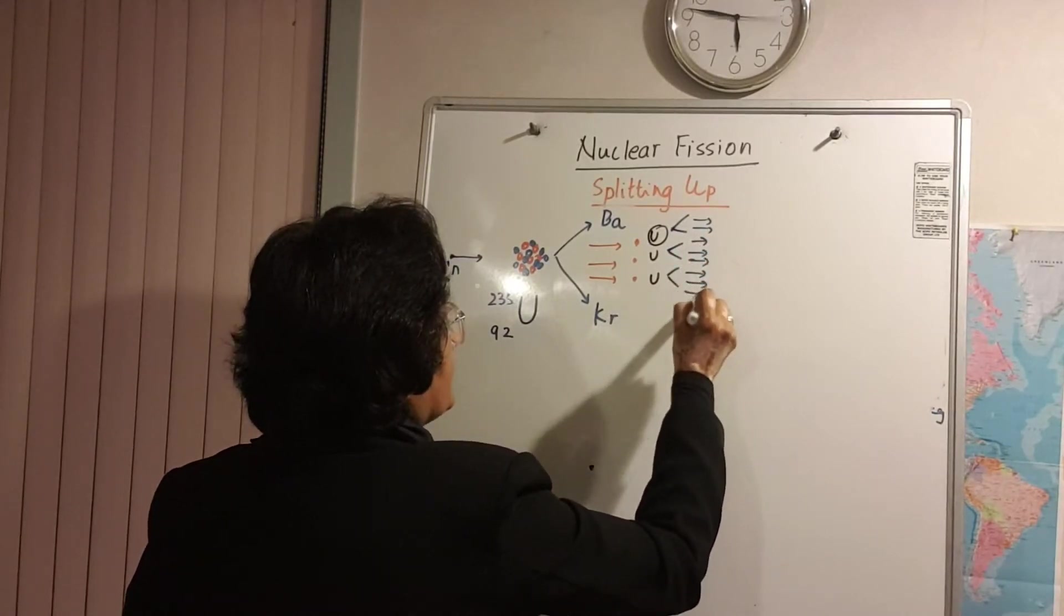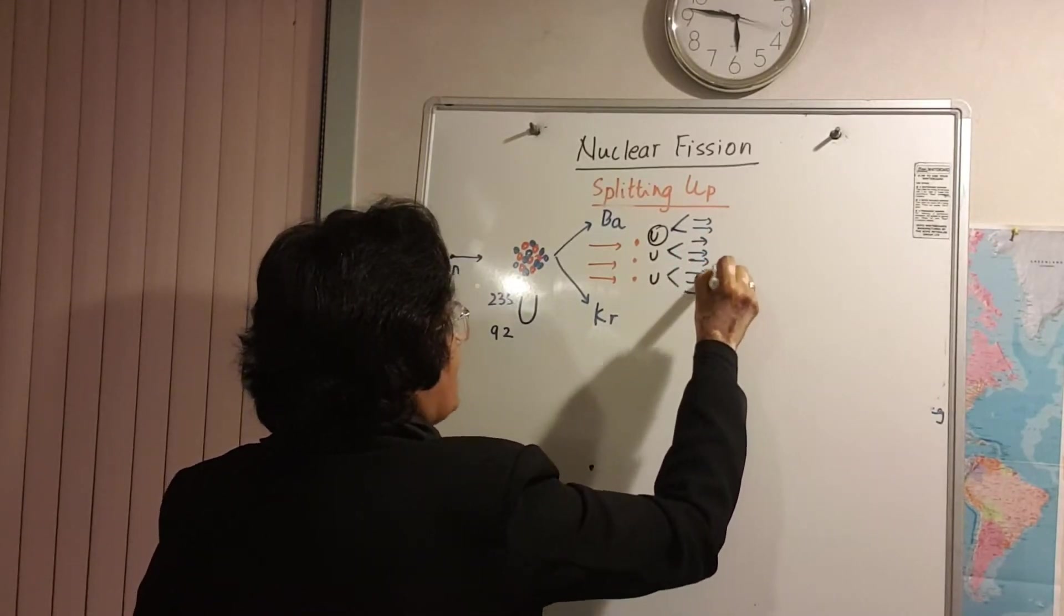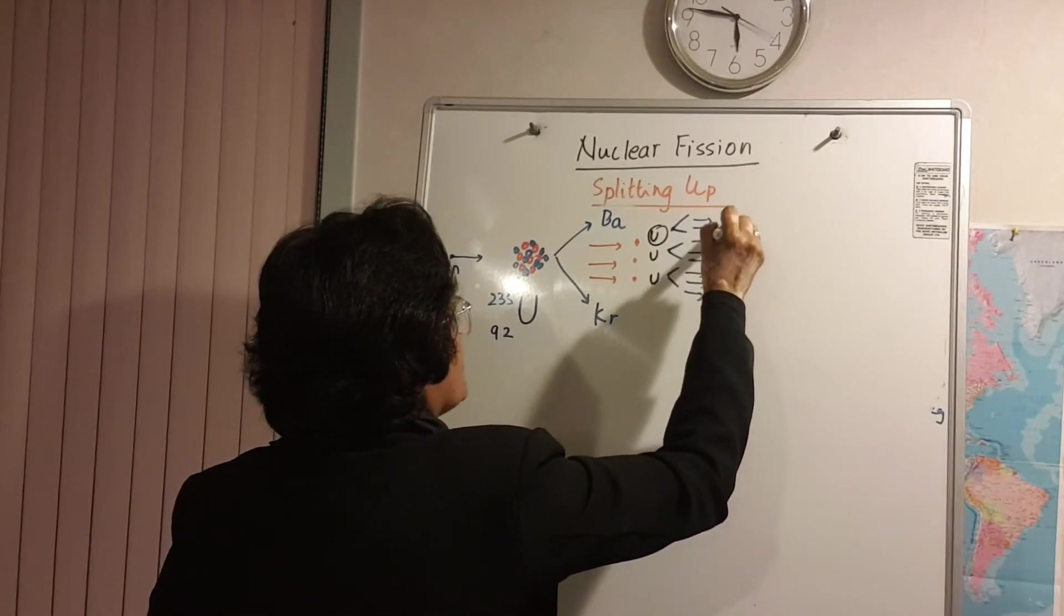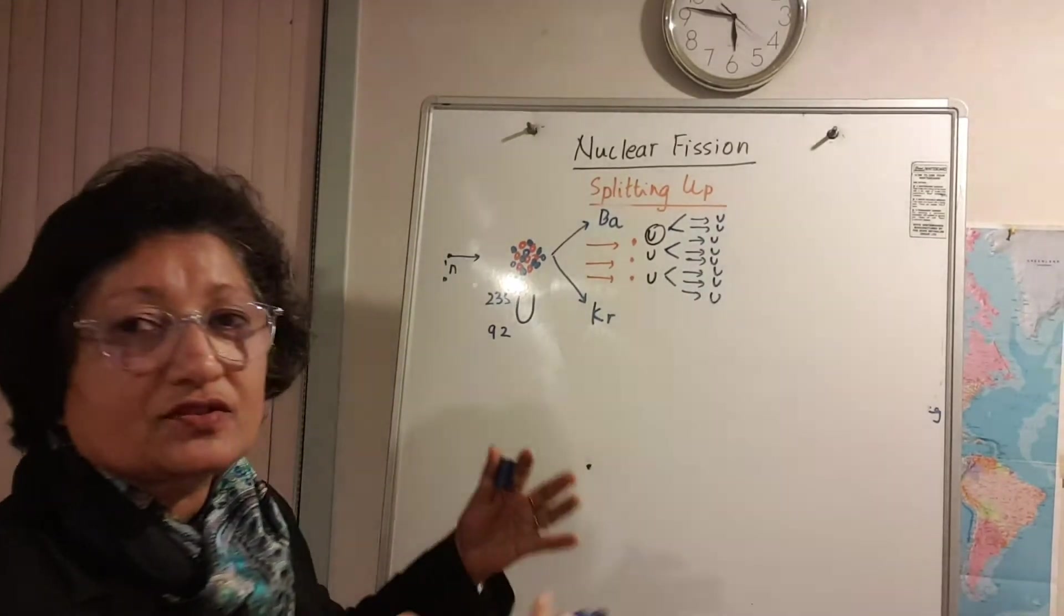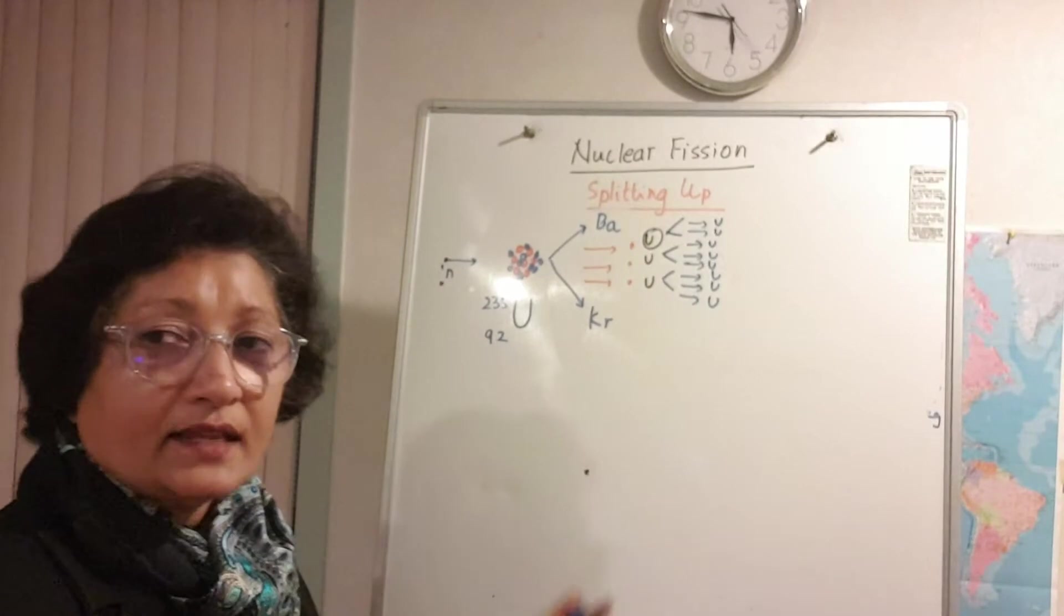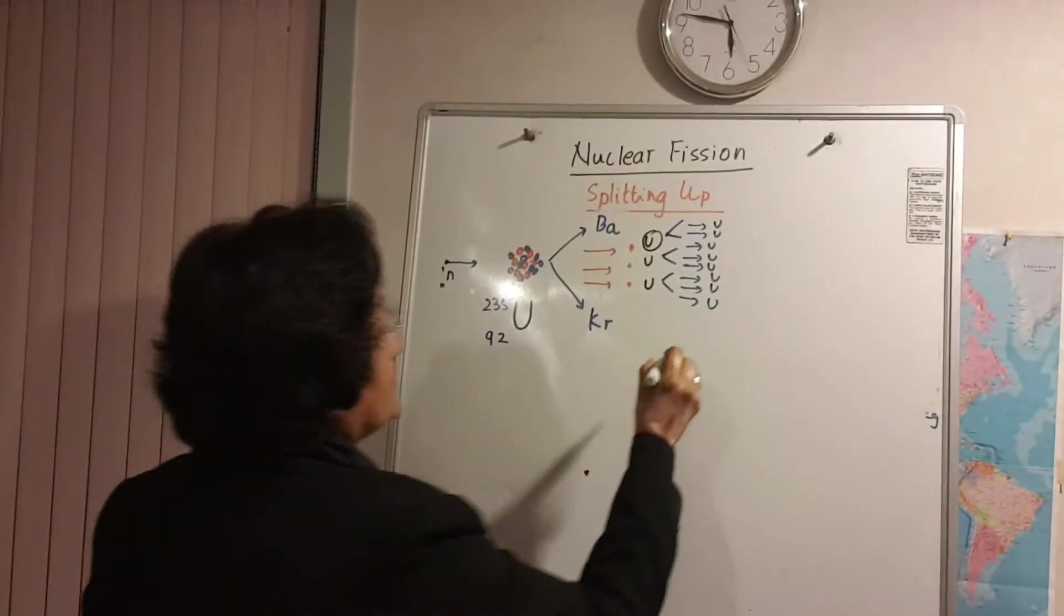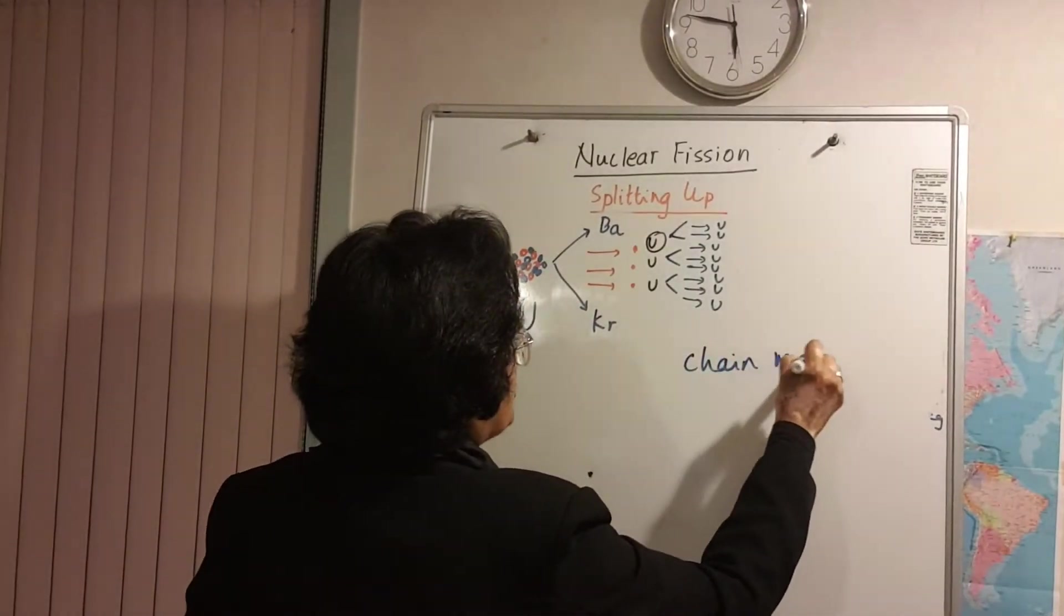And these are further absorbed by more uranium atoms and can you see it suddenly becomes an exponential growth and this sort of thing is called a chain reaction.